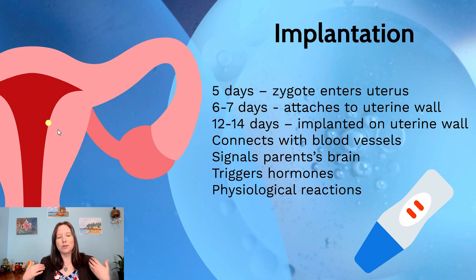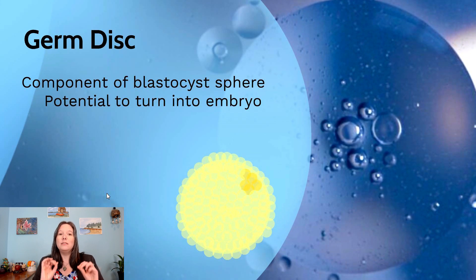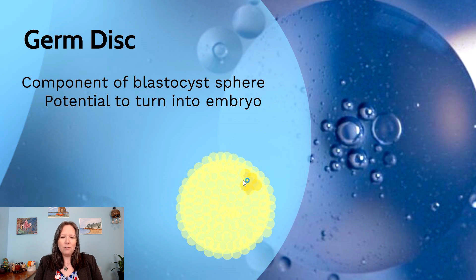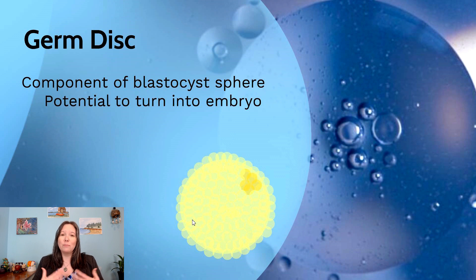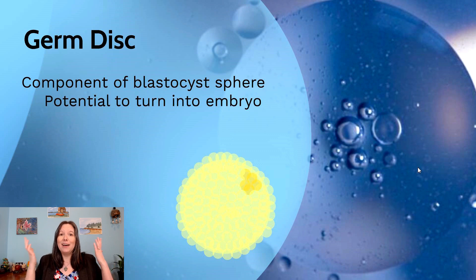HCG also triggers physiological reactions in the pregnant parent, such as nausea. Around day 14, we begin to see the first signs of specialization in the blastocyst — the germ disc. Some cells appear darker and are offset to the side; these have the potential to become an embryo. The lighter portions will become support organs and systems. The darker portion is what will germinate into a potential offspring. That marks the end of the period of the zygote.